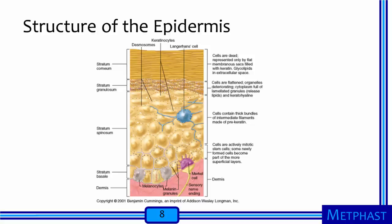Looking more closely at the epidermis, at the bottom is the stratum basale — the basal layer — where new cells form and work their way upward to eventually become the outermost layer. Above that is the stratum spinosum, then the stratum granulosum — the granular cell layer — where cells start to deteriorate, become flattened, and begin to release lipids. At the top of the epidermis is the stratum corneum. The cells here are dead and very flat, forming the harder, protective layer of skin. The stratum corneum is the skin's most critical barrier for preventing unwanted penetration of hazardous agents into the body.